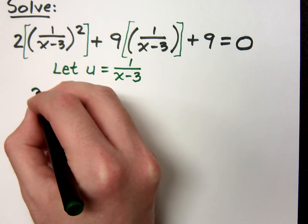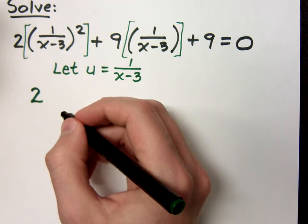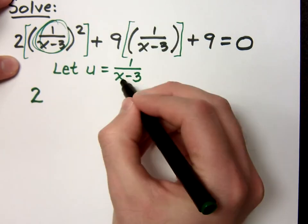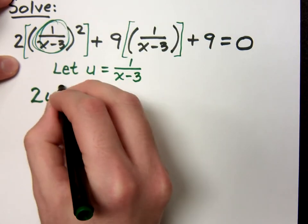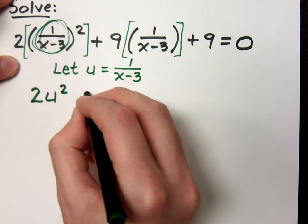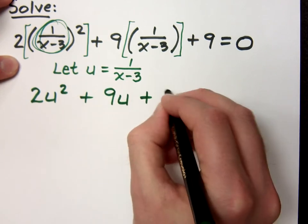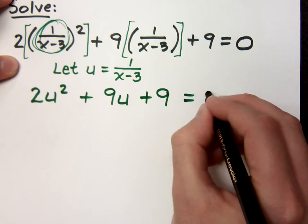So I'm going to write what I see here. My 2 is still 2, but instead of writing all of this, I'm replacing that with u. So it's 2u squared, and this guy becomes 9u plus 9 is equal to 0.